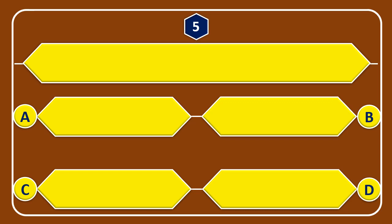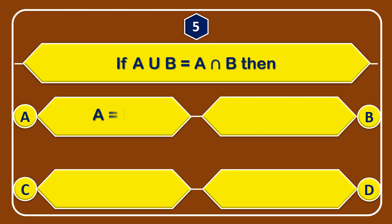Question number 5: If A union B is equal to A intersection B, then — A: A is equal to B, B: A is not equal to B, C: A is a subset of B, D: B is a subset of A.